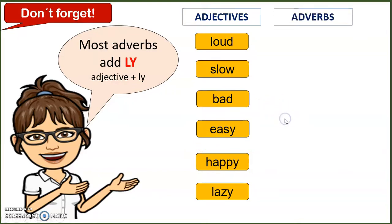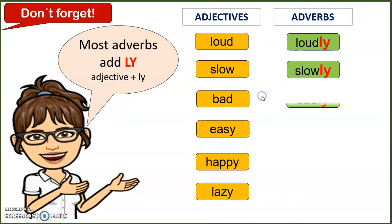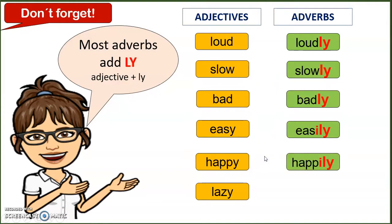Let's make adverbs now. Loud → loudly. Slow → slowly. Bad → badly. Easy → easily. Happy → happily. Lazy → lazily. Notice that for words where the adjective ends in -y, you remove the -y and put -i instead, followed by -ly. So: easily, happily, lazily. That's very important to keep in your mind.